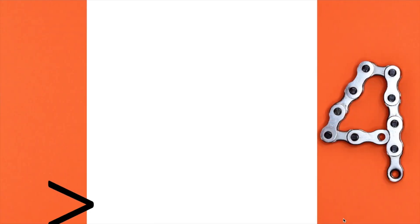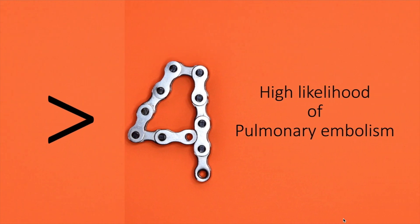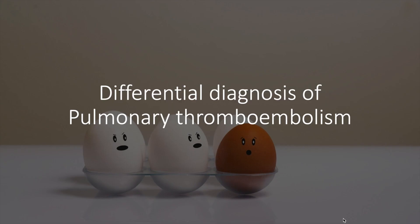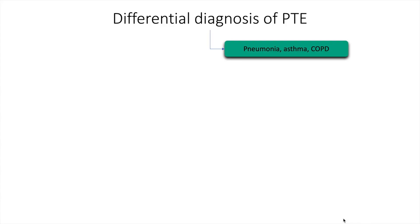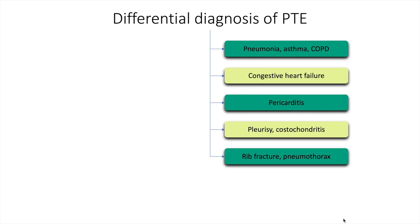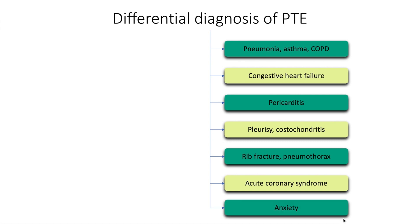The differential diagnosis of pulmonary thromboembolism includes pneumonia, asthma and COPD, congestive heart failure, pericarditis, pleurisy and costochondritis, rib fracture and pneumothorax, acute coronary syndrome, and anxiety.